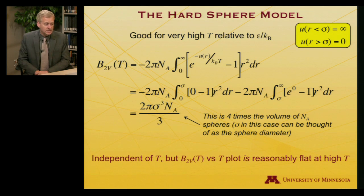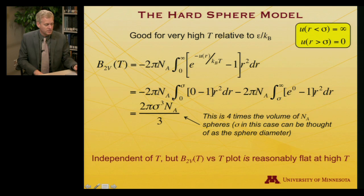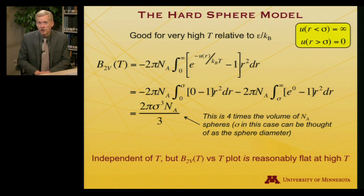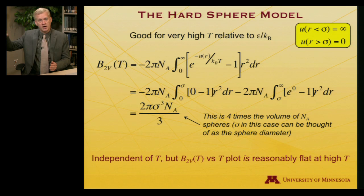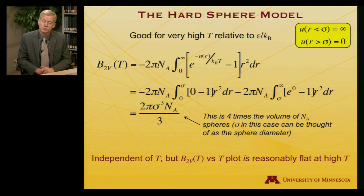That result is four times the volume of Avogadro's number of spheres having a diameter of sigma — a measure of occluded volume. This is what we expect the second virial coefficient to be: a positive number at high temperature, because you can't access the whole volume an ideal gas could due to the finite size of the gas molecules. Notice that it's independent of temperature. If you remember the plot of the second virial coefficient as a function of temperature, it goes up from low temperature, passes through the Boyle temperature, and then flattens out — effectively constant at very high temperatures. So this is a good approximation at very high temperature.